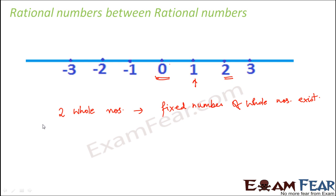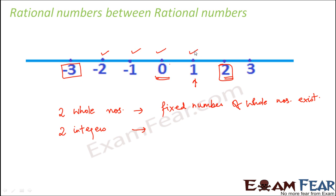Now let's talk about integers. Between -3 and +2, there are 4 integers: -2, -1, 0, and 1. Similarly, between -30 and +24 there are also a fixed number of integers. So between any two integers, there exist a fixed number of integers.